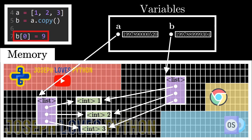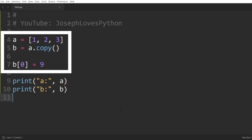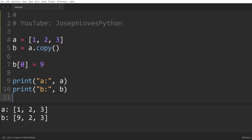Now when we modify the first element in list B, Python creates the new value 9 in memory, and the first pointer — unique to B and unrelated to A — will no longer point to 1 but to 9. This modification doesn't affect the elements of list A at all. Printing both A and B confirms B's value was updated while A remained unchanged. Printing the IDs of A and B verifies they point to different objects in memory.